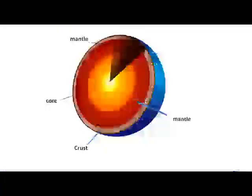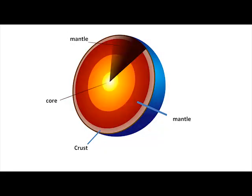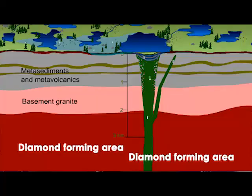Now let us look at inorganic gems, which are formed within the earth. The earth is divided into three parts: the innermost part is called the core, then the mantle, and finally the crust. Almost all gemstones are formed just beneath the crust, except diamond, which is formed about 250 kilometers deep, near the mantle.